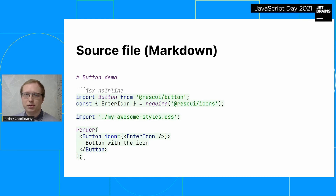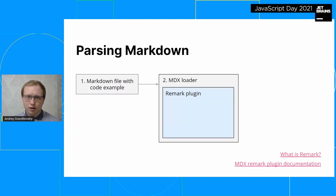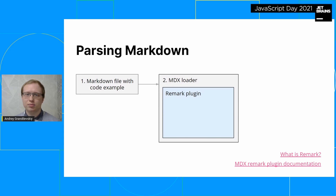We will work with the already familiar file with the button and icon example, and let's add a side effect import to demonstrate the algorithm. To build the documentation we use webpack, so all the basic logic will take place inside its loaders. The first step is to parse markdown using MDXJS and Remark. Remark is a markdown parser inside the MDXJS loader, and to extract dependencies we will write a plugin for it.